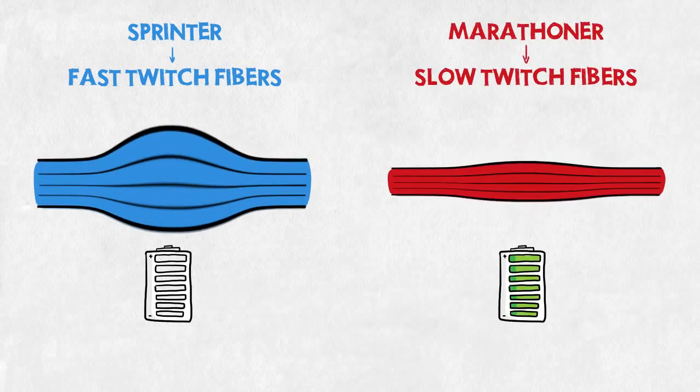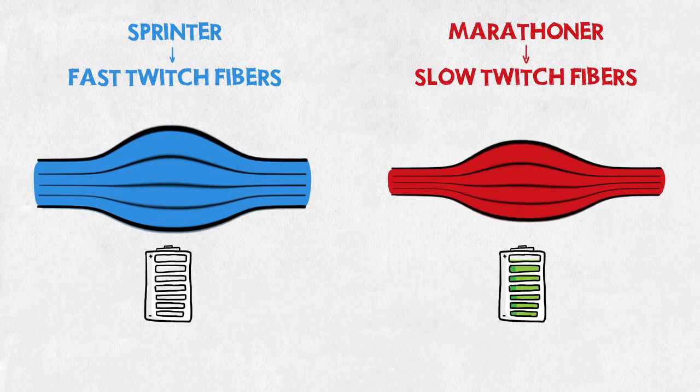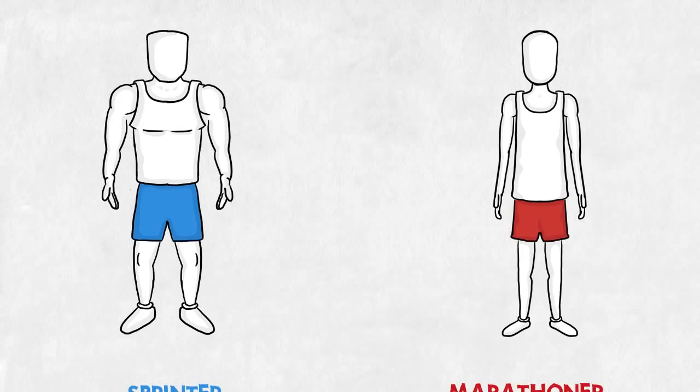On the other hand, a marathoner uses mostly his slow twitch fibers, not as reactive and speedy as their fast twitch brothers, but they can work nonstop for hours. Even when trained, these fibers remain slim and light.